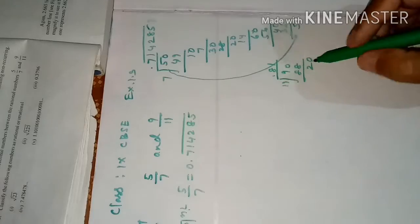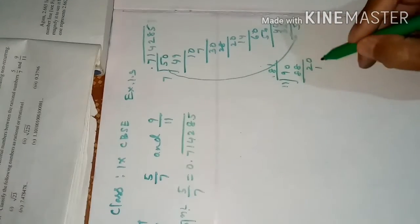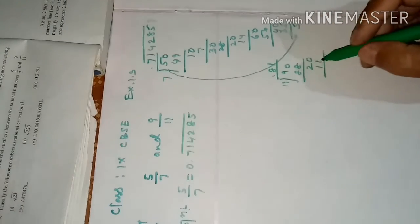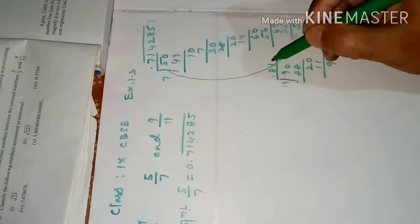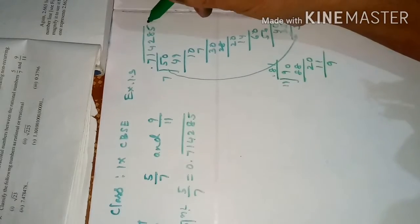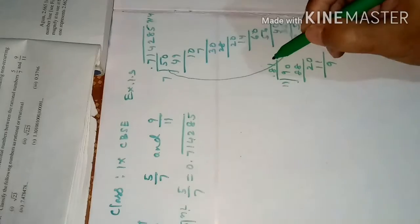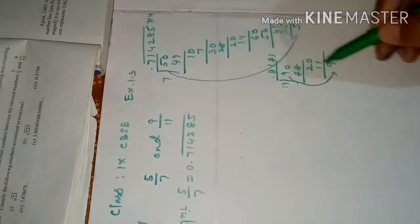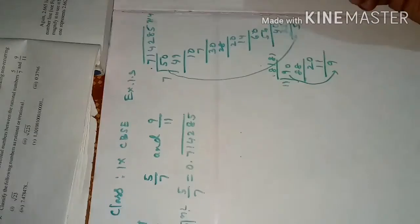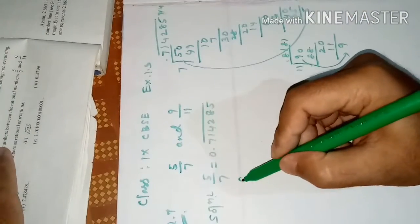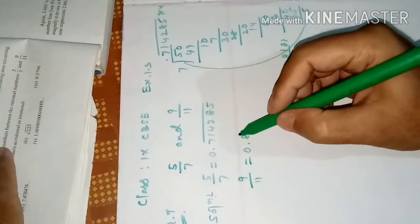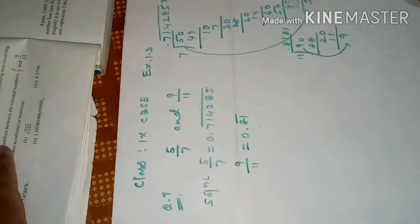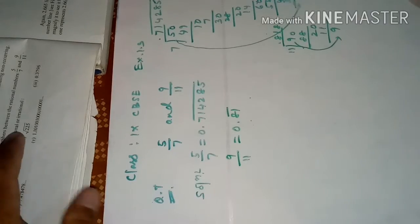Similarly, let us find 9/11. Dividing 9 by 11: we get 8, remainder 2; then 0, 11 goes into 20, giving 1, remainder 9 — and then 90 comes again, so it repeats. So 9/11 = 0.8̄1̄ — 2 digits repeated.